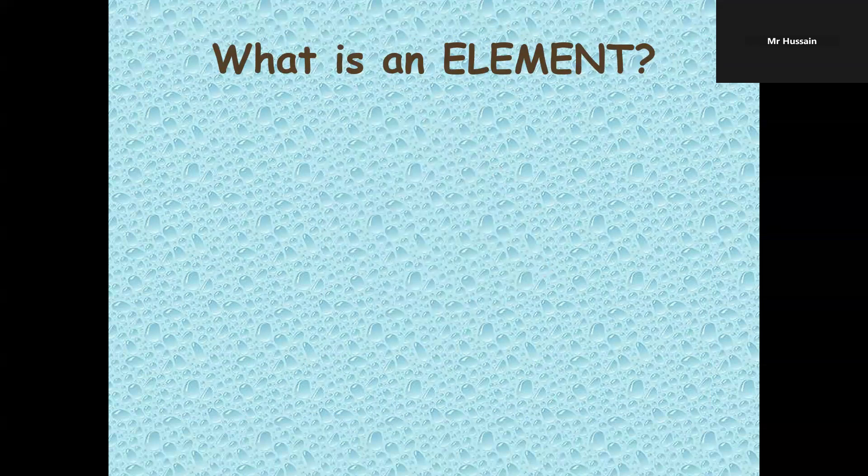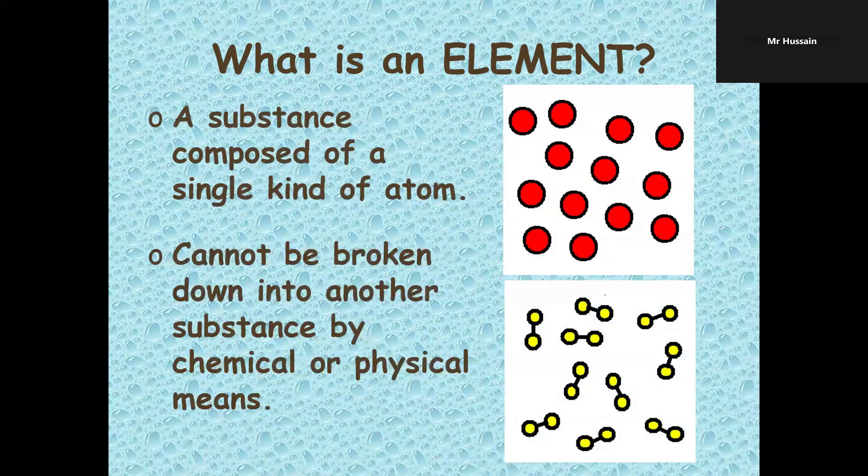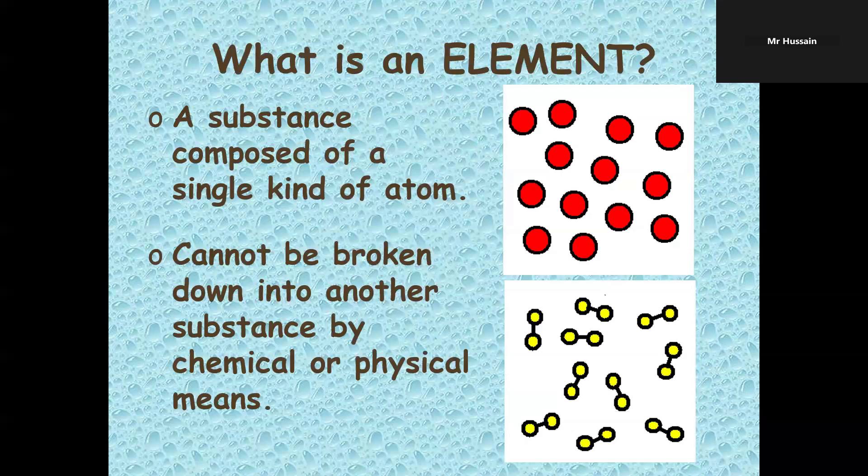What's an element? What do you see in these two pictures? All circles are red on the right top picture. The bottom one, you see two atoms connected together and all are the same. So what's an element? A substance composed of a single kind of atom. Elements cannot be broken down into another substance by chemical or physical means.